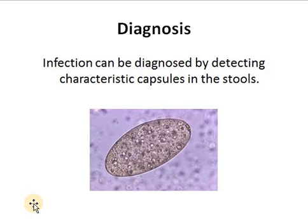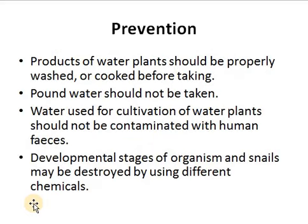The disease is called fasciolopsiasis. The infection can be diagnosed by detecting the characteristic eggs present in the stool, detected with the help of microscopy or by preparing stool slides. Prevention includes avoiding raw water plants; if used, they should be properly washed or cooked. Pond water should not be taken directly without purification. Water used for cultivation of water plants should not be contaminated with human feces. Developmental stages in snails may be destroyed using different chemical agents.